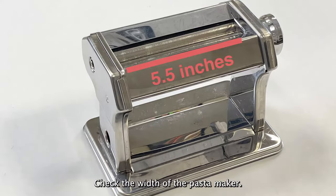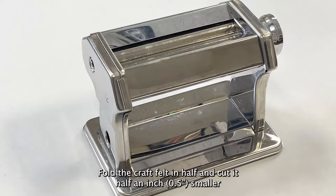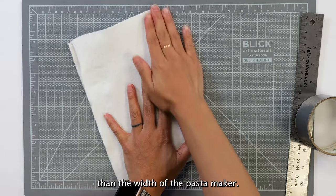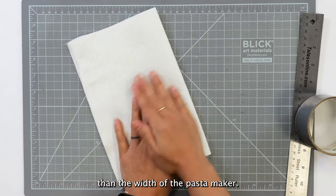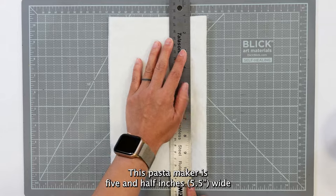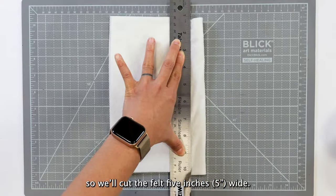Check the width of the pasta maker. Fold the craft felt in half and cut it half an inch smaller than the width of the pasta maker. This pasta maker is 5 and a half inches wide, so we'll cut the felt 5 inches wide.